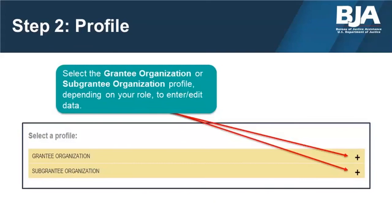The first profile page of the PMT displays the various awards your organization receives. If your organization receives funds from various sources within BJA, you will have access to multiple profiles. The picture on this slide depicts an organization that receives funding directly from BJA — making them a grantee — and who also receives sub-award funding from another state agency, making them a subgrantee. To enter or edit data, select the grantee or subgrantee profile you want to report on by clicking the plus sign and then your organization's name. Note that you will not see this page if you only have one PMT profile or award.